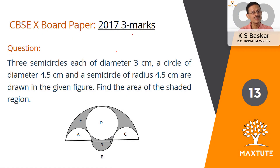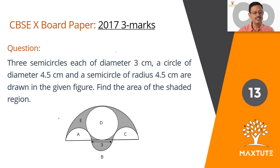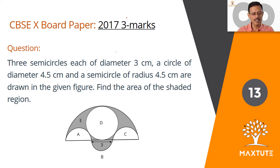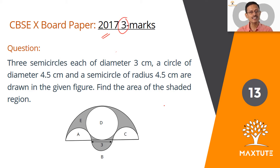This is a mensuration question. The task at hand is to find the area of the shaded region in the figure given below. The figure comprises semicircles and circles. It's a three-mark question that appeared in the 2017 CBSE Class 10 board exam. Unlike the last probability question, this question has enough work that we deserve three marks for it.